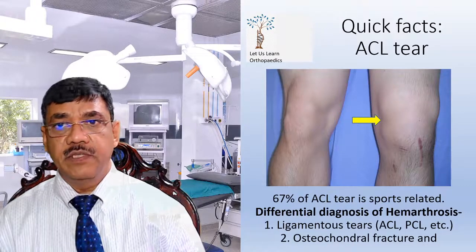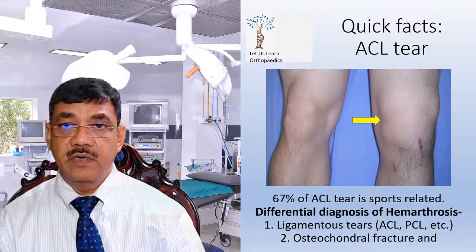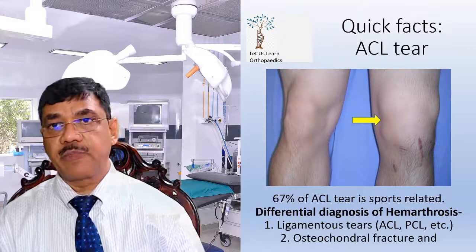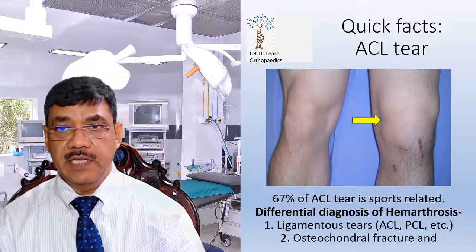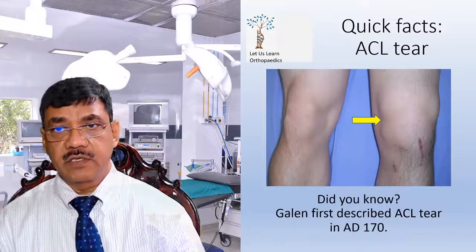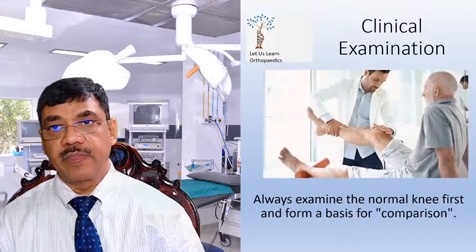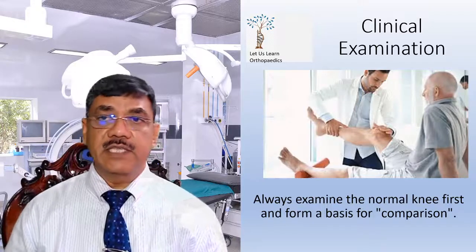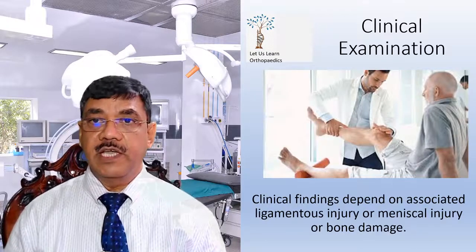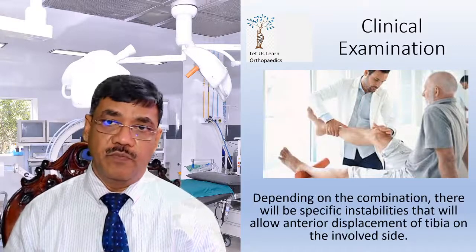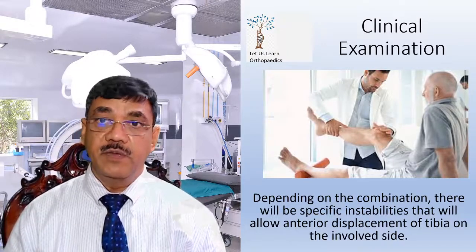We must remember that 67% of ACL tears are force-related. Clinical features include a popping sensation felt or heard at the time of injury, which signifies ligamentous injury — particularly ACL tears. The patient also reports that the knee gave way or buckled at the time of injury. Swelling of the knee could be due to haemarthrosis or traumatic synovitis, and the distended knee is held in partial flexion by the hamstrings. The differential diagnosis of haemarthrosis includes: first, ligamentous tear such as ACL or PCL; and second, osteochondral fractures. Always examine the normal knee first, as it forms the basis for comparison.